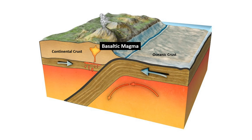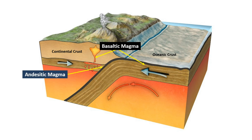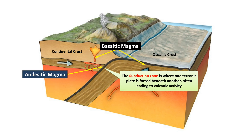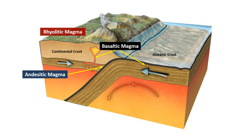Location of formation: In this depiction, basaltic magma originates in both continental and oceanic crusts. Andesitic magma is produced in a subduction zone, where one tectonic plate is forced beneath another, often leading to volcanic activity. Rhyolitic magma, on the other hand, is generated within continental crusts.